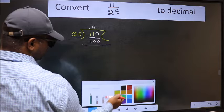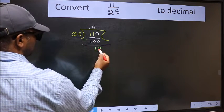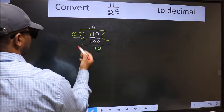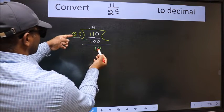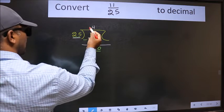Now we should subtract. We get 10. Here we have 10 and here 25. 10 is smaller than 25, and we already have the decimal.